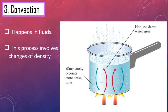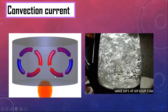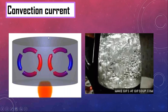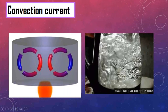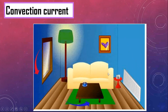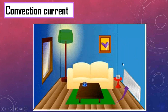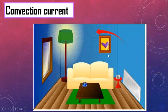Let's look at the animation again — the same process: less dense particles move up, more dense particles sink, and this happens continuously. This is convection current. Another example: in a room with a radiator, the air around the radiator warms up, particles gain kinetic energy, expand, become less dense, and rise. Cooler, denser air particles sink. This continuous process is also a convection current.